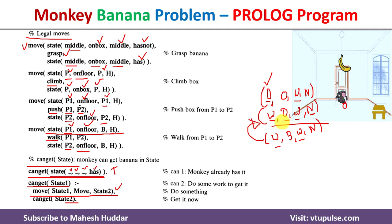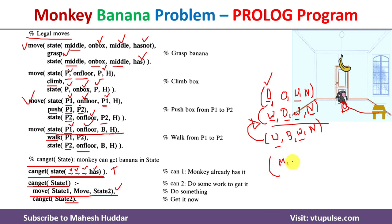We backtrack to the previous state. Instead of executing climb, we check if there are other moves. Both monkey and box are at the same position and the monkey is on the floor, so push can be executed. The monkey pushes the box from P1 (window) to P2 (middle). The monkey also moves to middle and is still on the floor. The box is now at the center. Still the monkey has not got the banana.